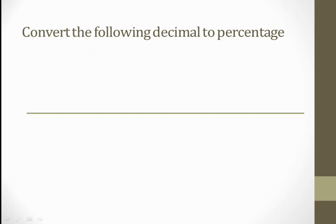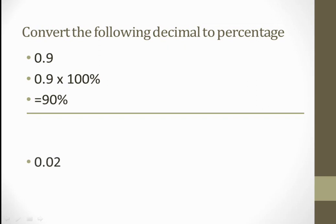Convert the following decimal to percentage. The decimal is given and I need to convert it into percent, so I multiply with 100 percent. 0.99 multiplied with 100 percent gives 99 percent. Let us take one more example: 0.02. Again 0.02 is multiplied with 100 percent to convert it into percentage, giving 2 percent.